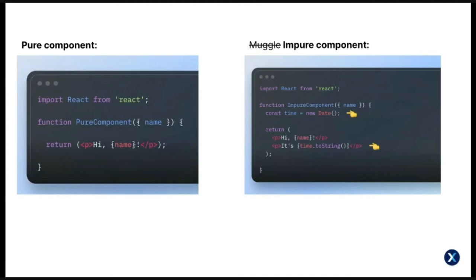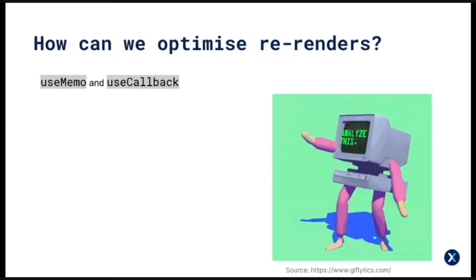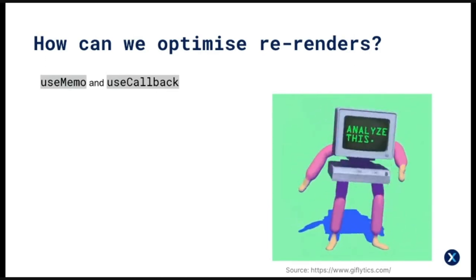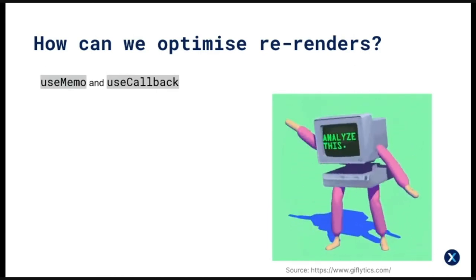React is heavily optimized to make re-renders less expensive out of the box — it's basically built for rendering and re-rendering, so having a lot of re-renders is not necessarily a bad thing. Another benefit is that React only re-renders from the state change down, not the entire app, so for the most part you'll find that lots of re-rendering isn't a problem for smaller components.